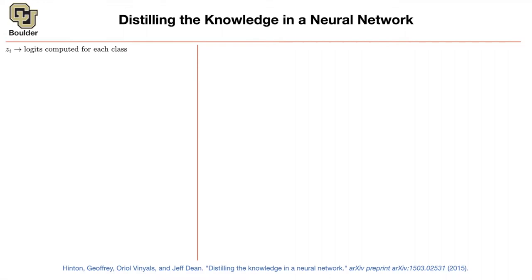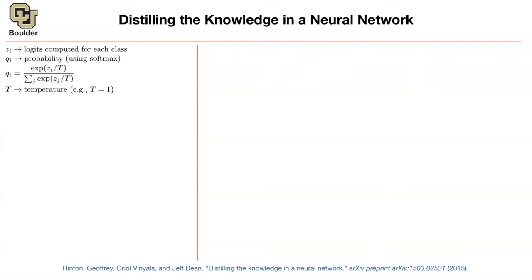A little bit of notation. Let z_i denote your logits computed for each class — these are your scores for each class, where i denotes the class number. They are numbers between negative infinity to positive infinity. We convert them into probabilities using softmax. But now we are going to introduce a new parameter called temperature in our softmax. If T equals one, you get the usual softmax back. If you increase the temperature, you end up with a softer probability distribution over your classes.